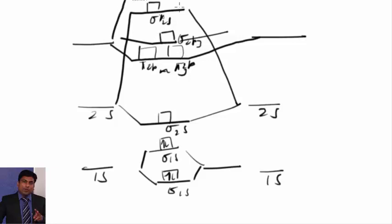pi star 2px, pi star 2py will be here and then sigma star 2pz. Now 2 electrons will be filled here, then other electrons will be filled here and 1 electron will be here.